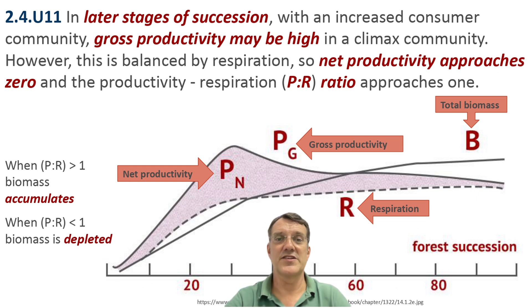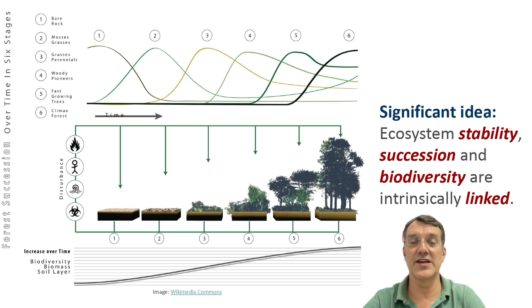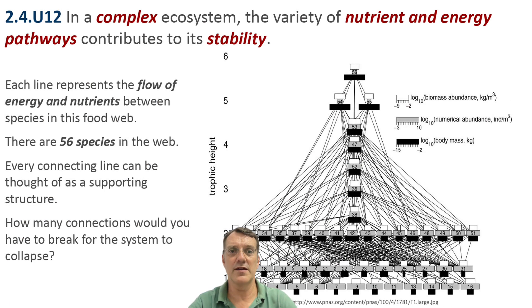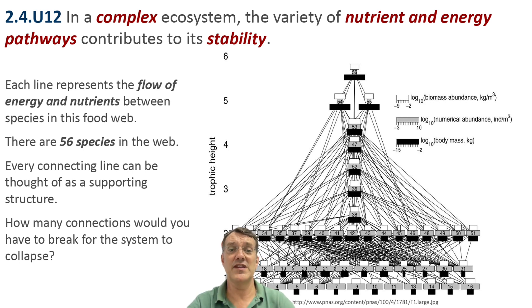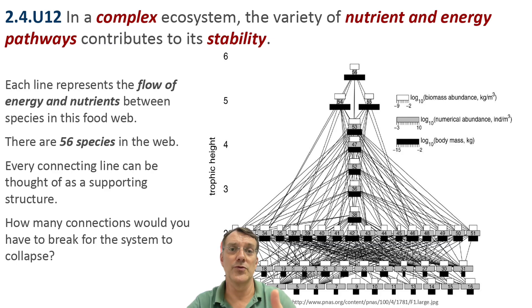This diagram illustrates how ecosystem stability, succession, and biodiversity are intrinsically linked. It shows the progression from bare rock through pioneer stages to climax forest, with increases in biodiversity, biomass, and soil development throughout the process. In a complex ecosystem, the variety of nutrient and energy pathways contributes to its stability. This food web diagram shows 56 species with numerous connections — each connecting line represents energy flow. The more connections that exist, the more resilient the whole system becomes to disturbances.